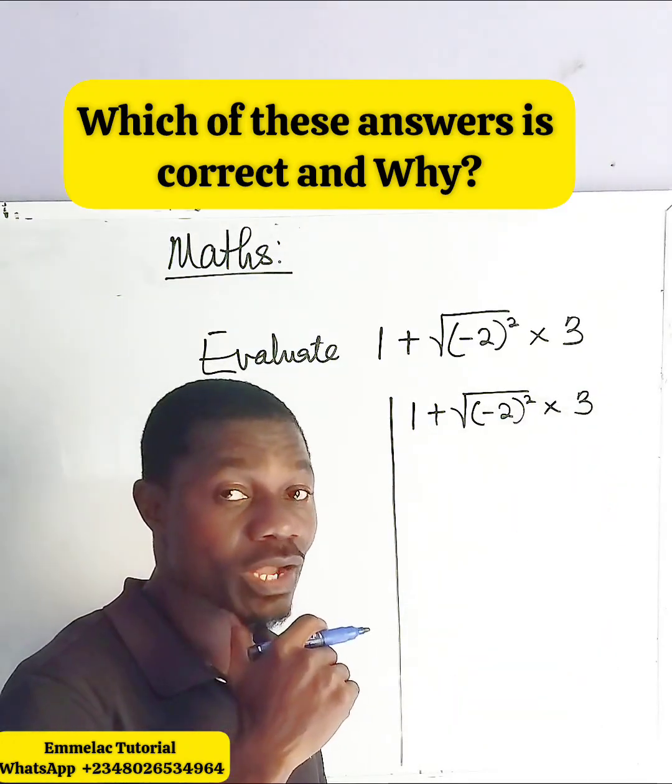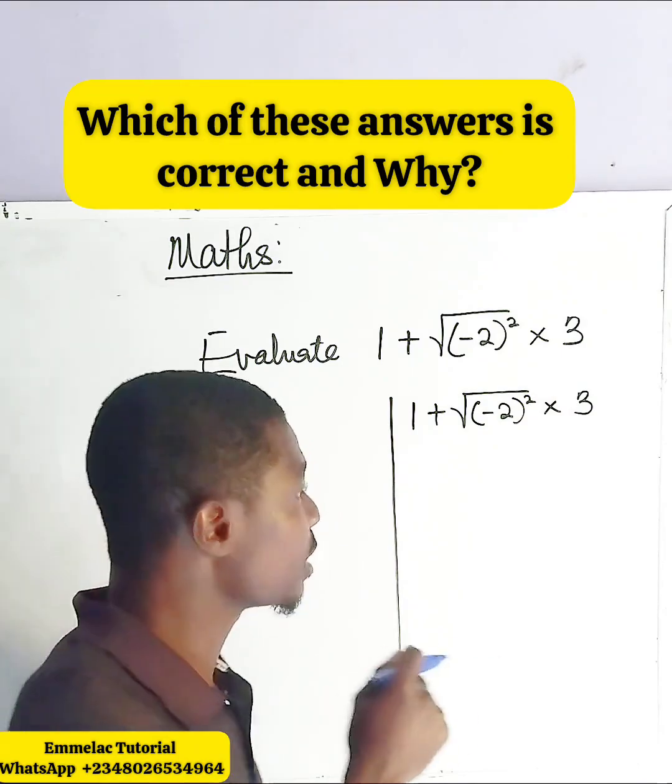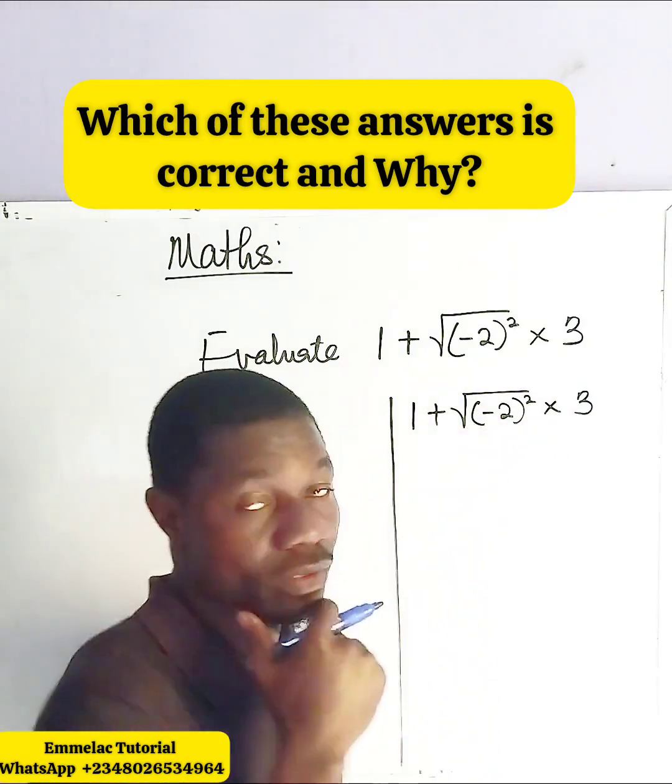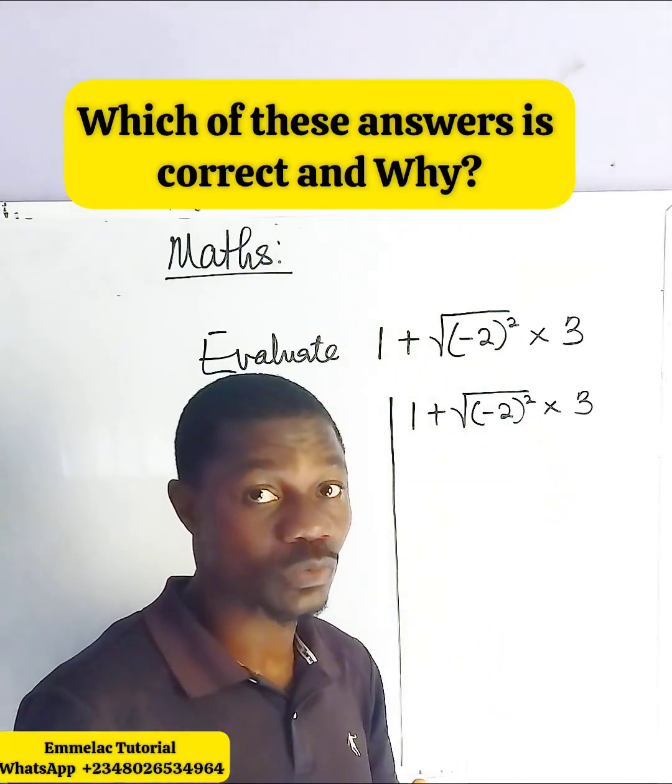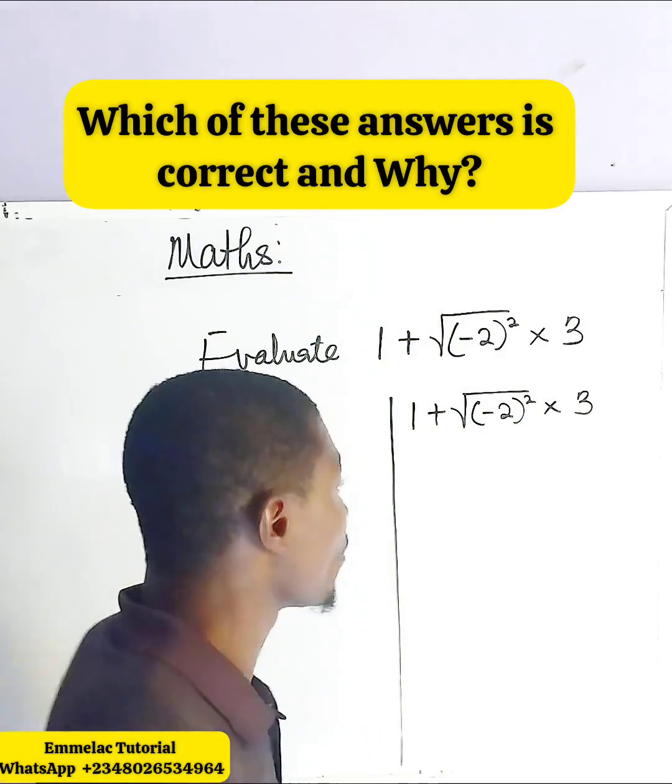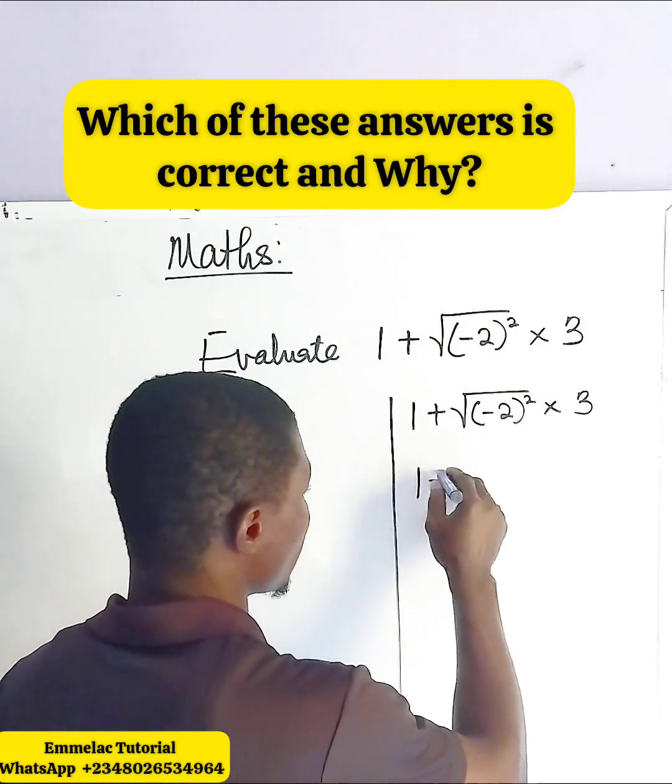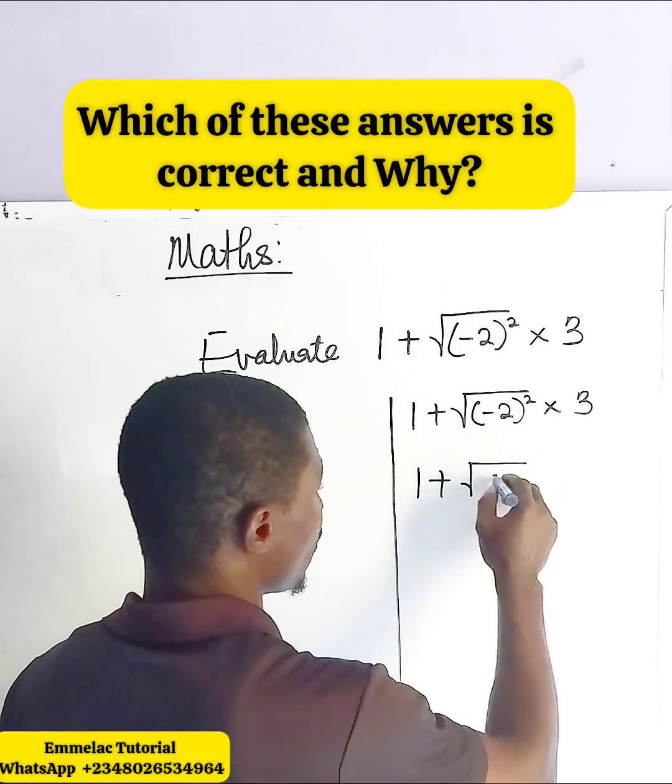Now looking at this, we'll look at the bracket. And whatever is in the bracket, raised to the power of 2, that's what? Negative 2 times negative 2, that would be 4, right? So here we have 1 plus the square root of 4.